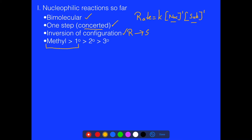We saw that methyl and primary reacted the fastest, and secondary and tertiary the slowest. That was what happened in lab — primaries react faster, and tertiary groups react slower. In some cases, there might be a leaving group effect that would change that a little bit.